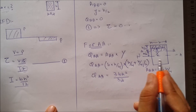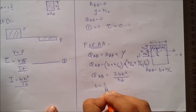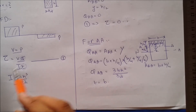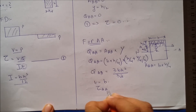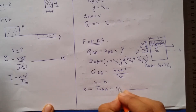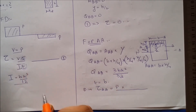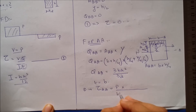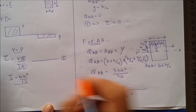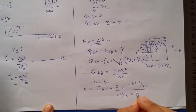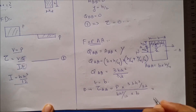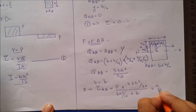The thickness at section AA is B. Substituting these values into equation 1, VQ/IT, with V equal to P, Q equals 3BH²/32, and I equals BH³/12, we get the shear stress τ at section AA.